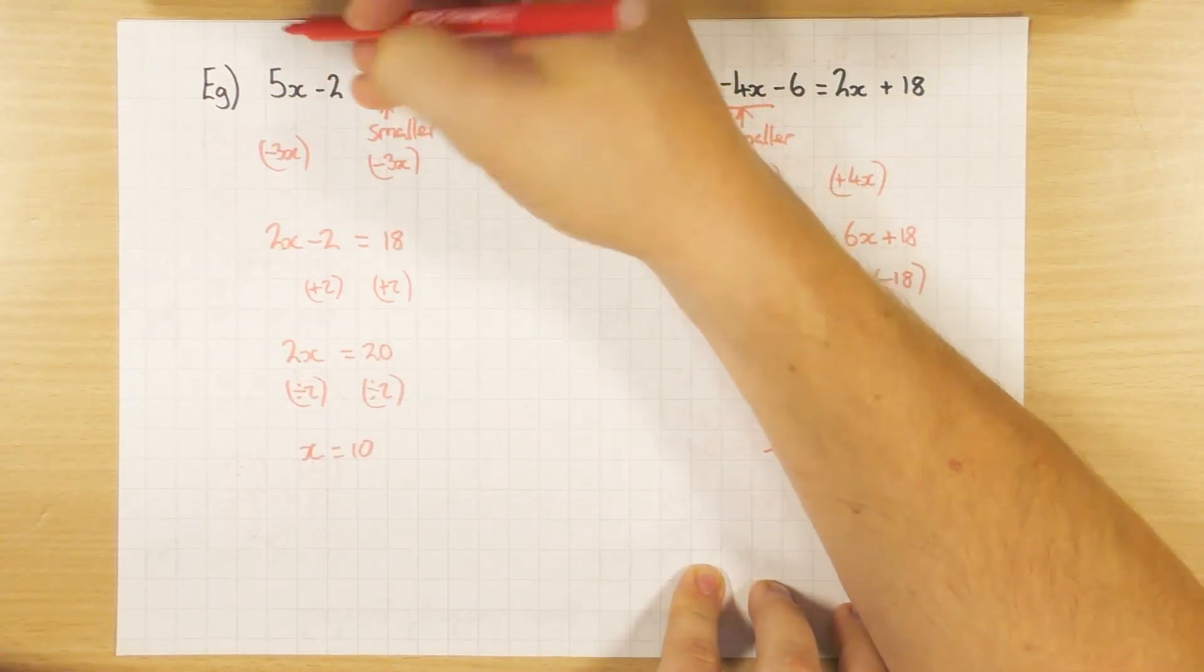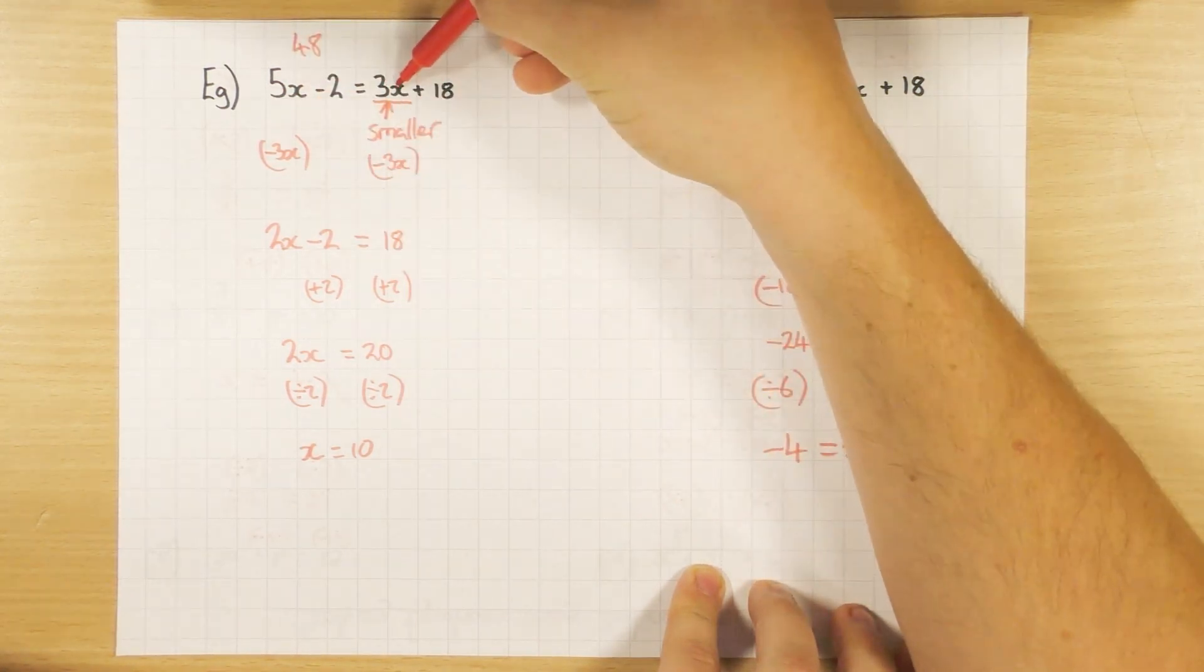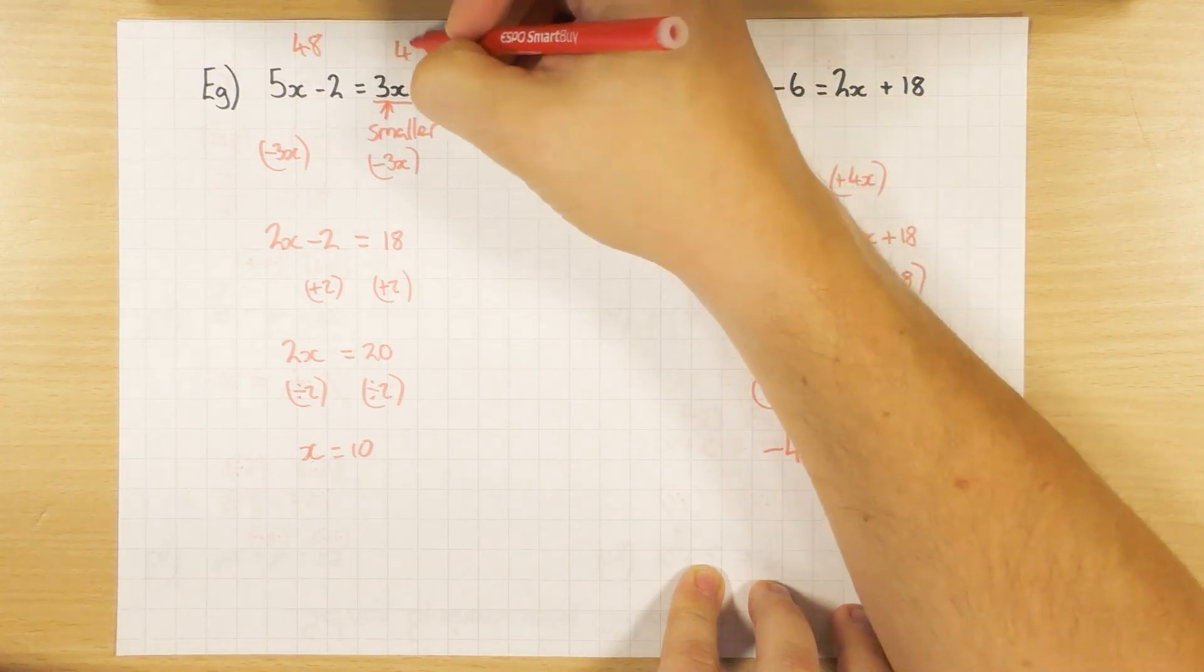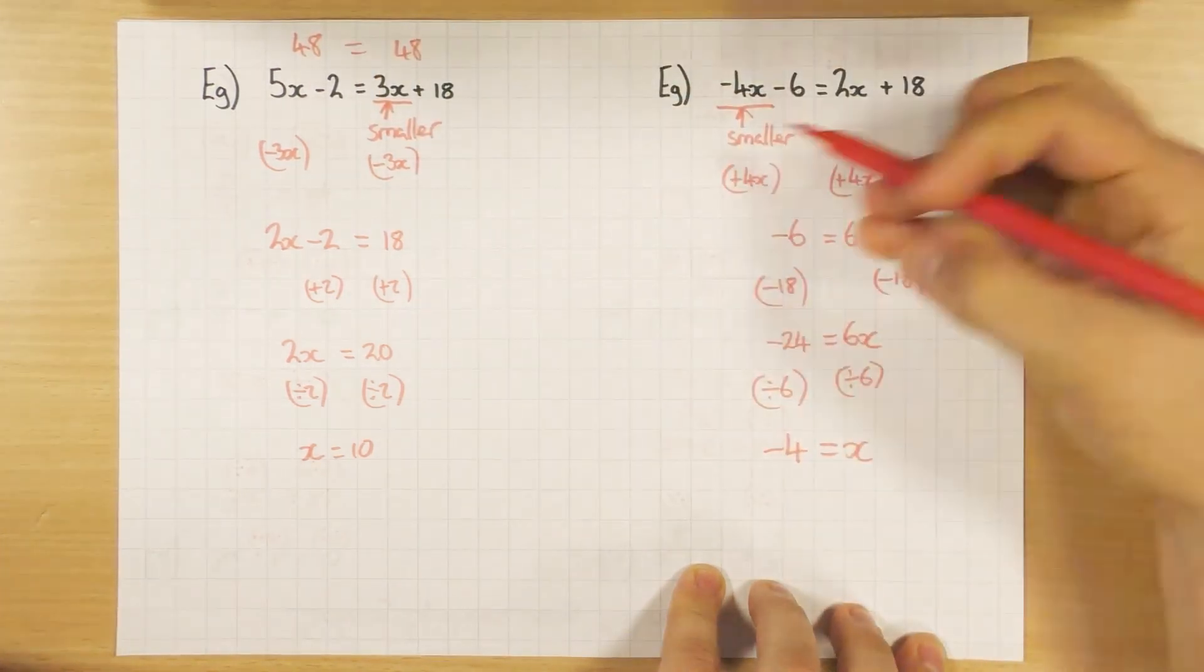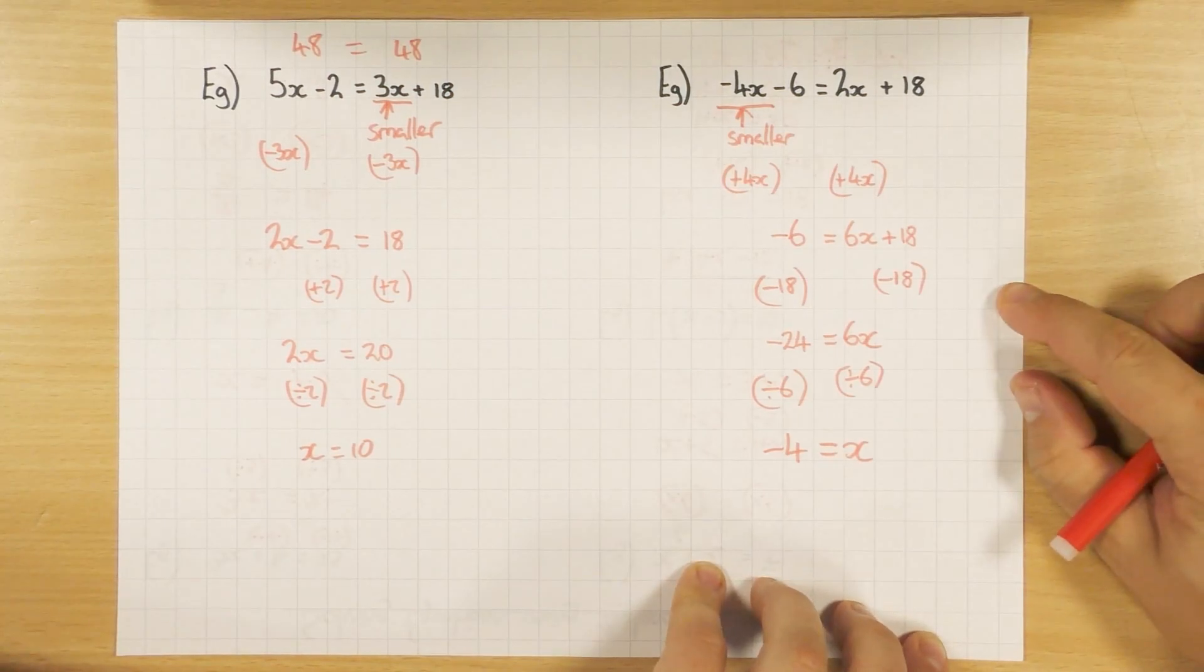And just like with the other ones, you can substitute your answers back in and test them. We'll do it this one because 10 is much nicer and easier and quicker. 5 times 10 is 50, take away 2 is 48. On this side, let's have a look at this one. 3 times 10 is 30, plus 18 is 48. And obviously 48 equals 48. So again, you can check these ones just by working out the left hand side and the right hand side.